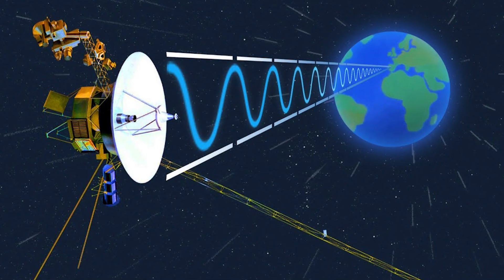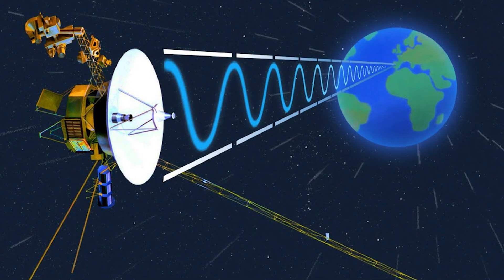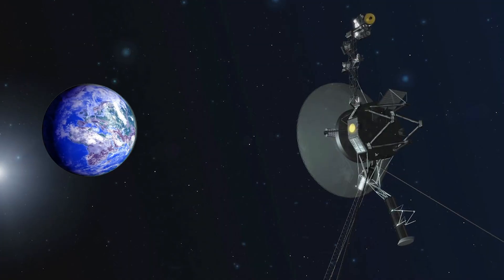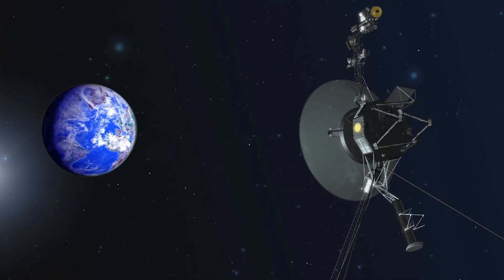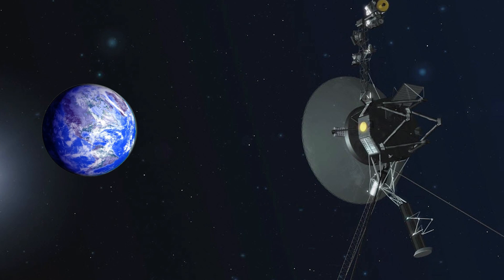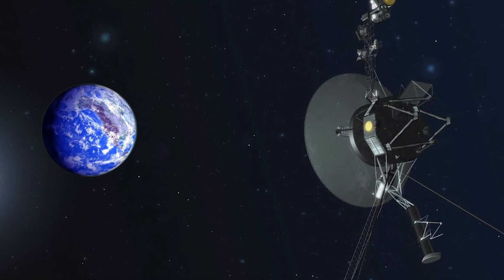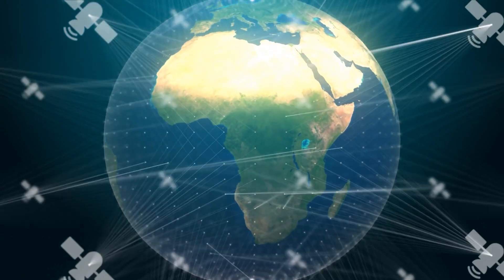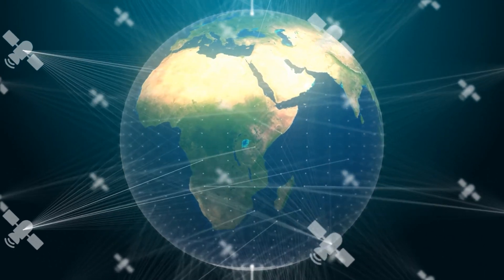The Voyager missions utilized radio communication, employing signals traveling at the speed of light to send and receive messages. However, due to their immense distance from Earth, advancing by three or four light seconds every day, maintaining a connection proved challenging. It took over 18 hours for signals from Voyager 2 to reach us.